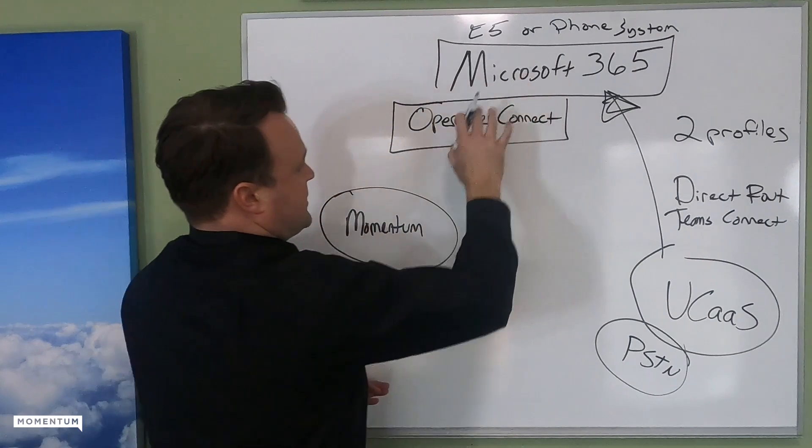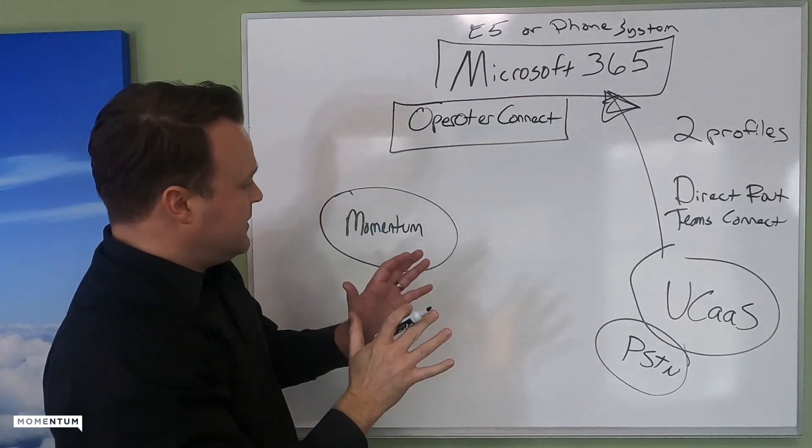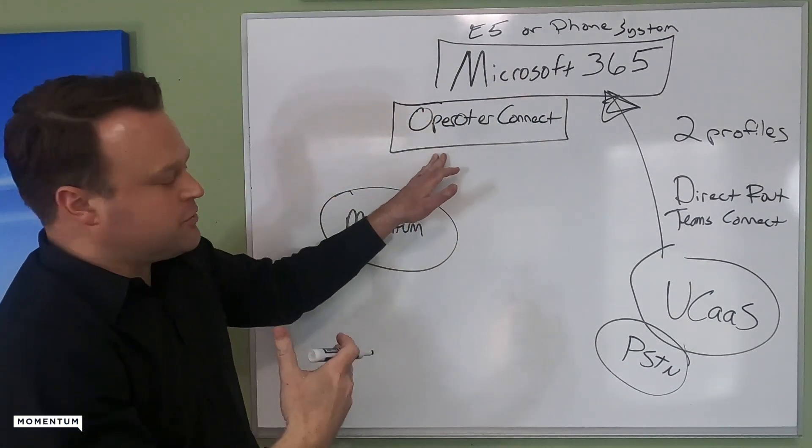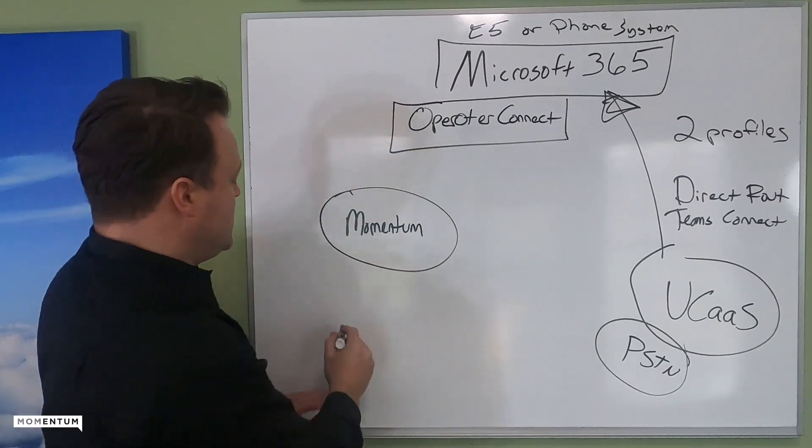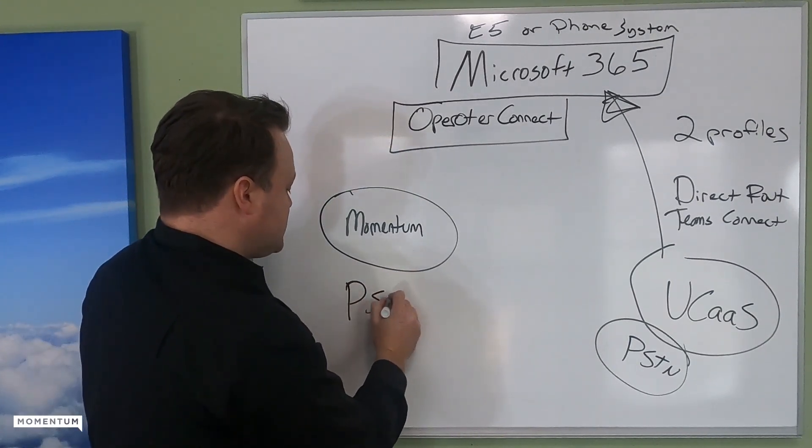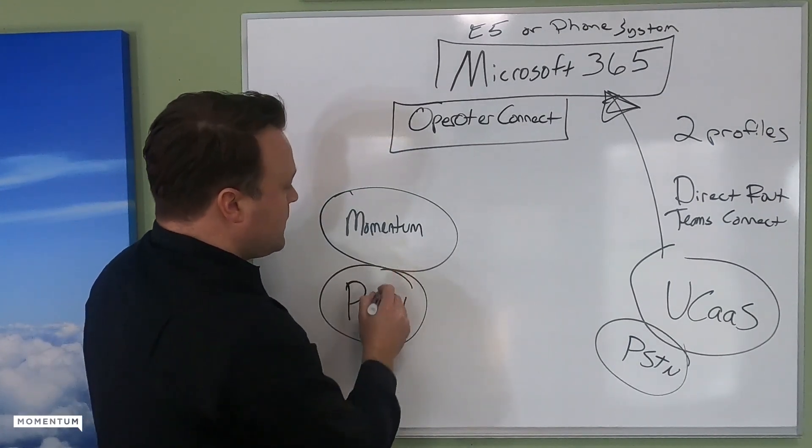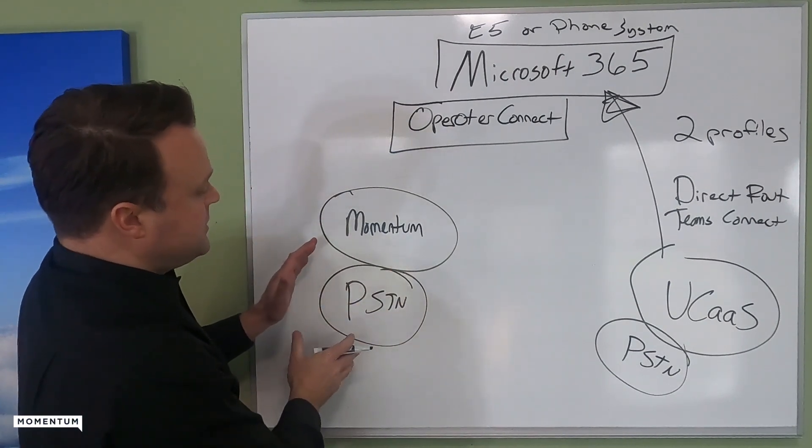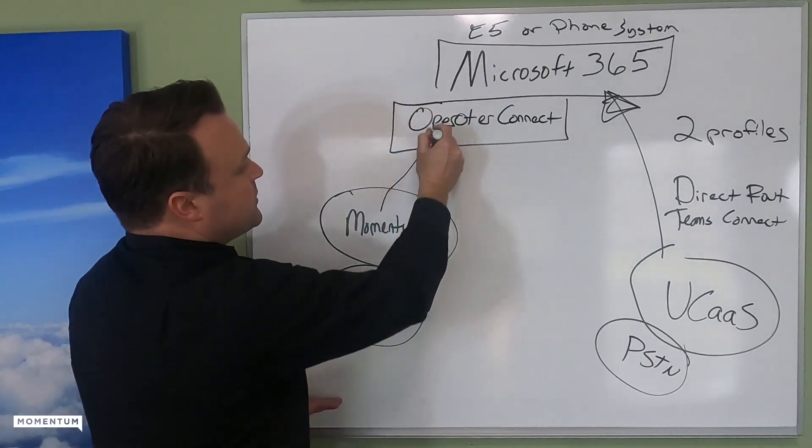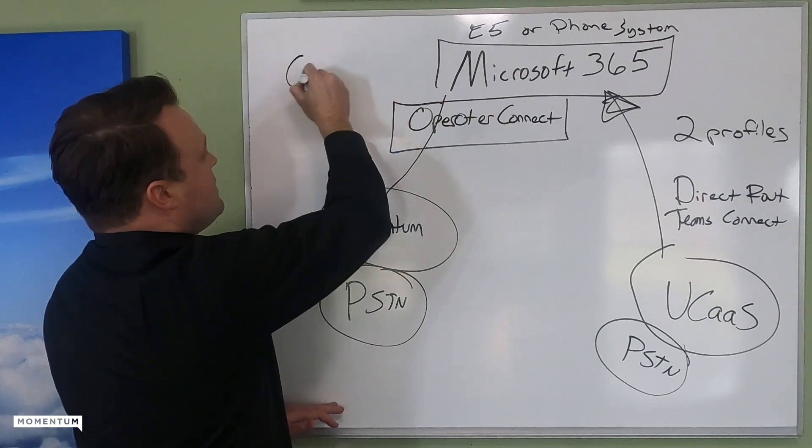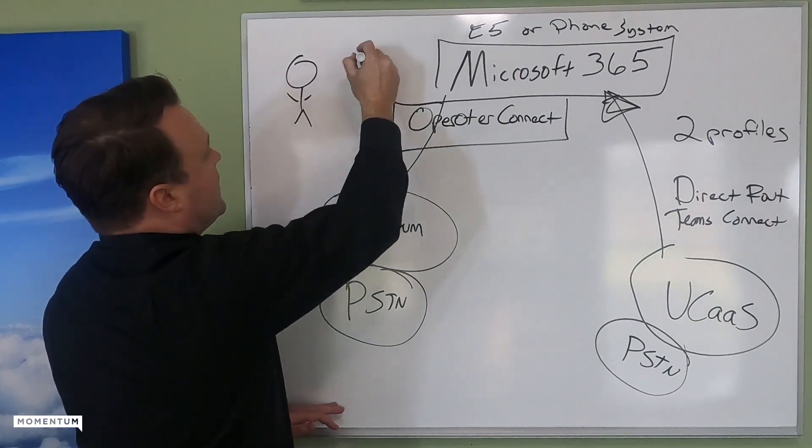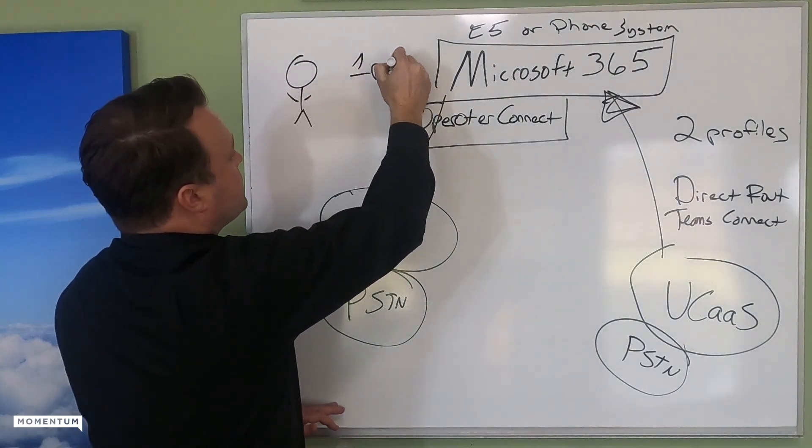Operator Connect sits inside of Microsoft environment. So as you enable users, you see Momentum in there. We are the PSTN connectivity for all your call originations. So calls flow in, they flow into Microsoft, and you have one profile for your users.